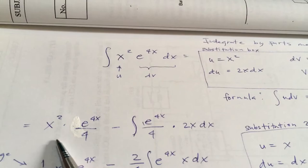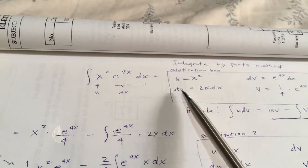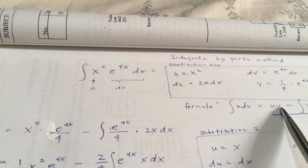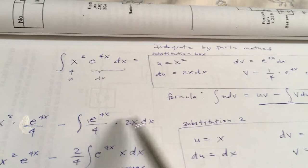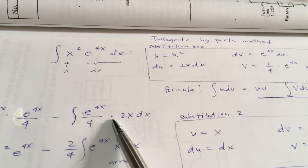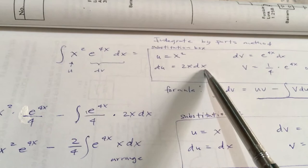Use the formula: uv minus the integral of v du. Where u is x squared, v is e raised to the 4x over 4, minus the integration of v — e raised to the 4x over 4 — times du, which is 2x dx.